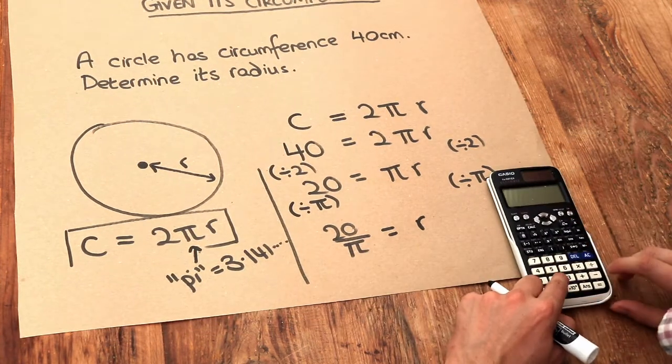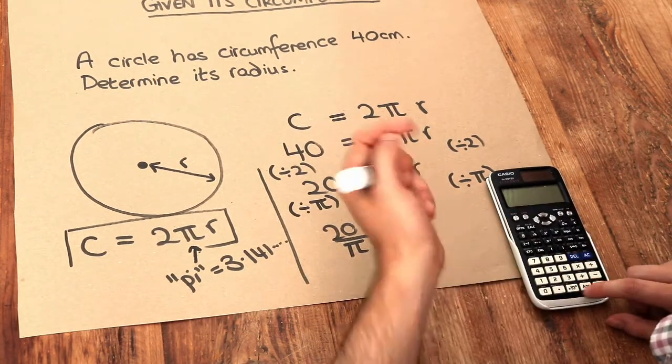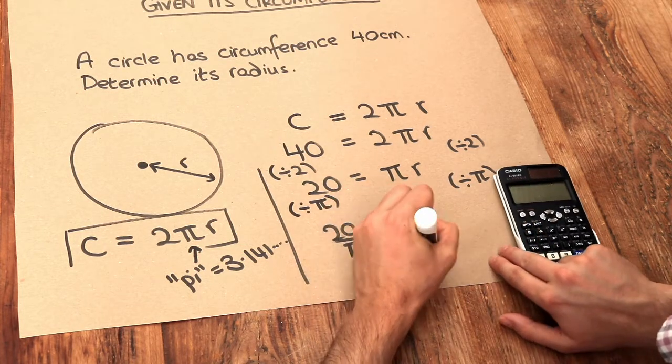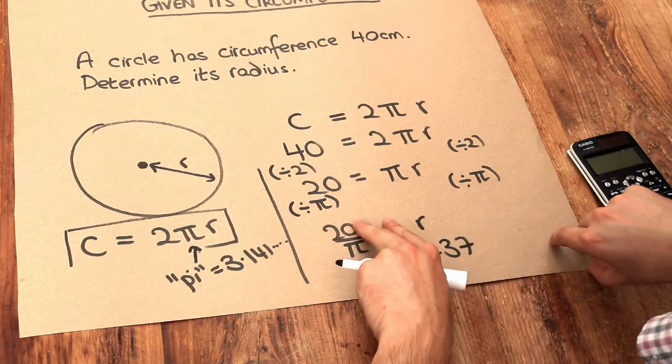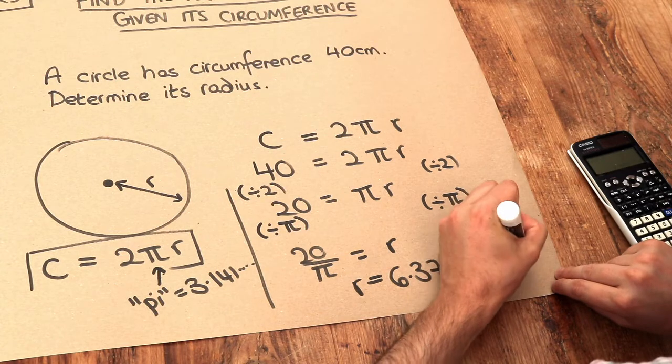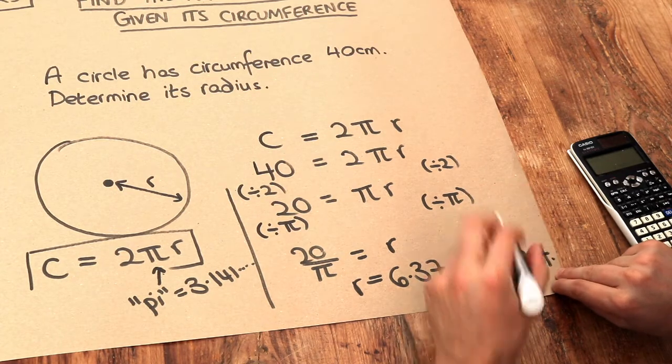Now if I want this as a decimal, I can do 20 divided by π or over π on my calculator. And that's giving me a value of 6.37. And the unit is going to be centimeters. And that was to three significant figures. So that's the final answer.